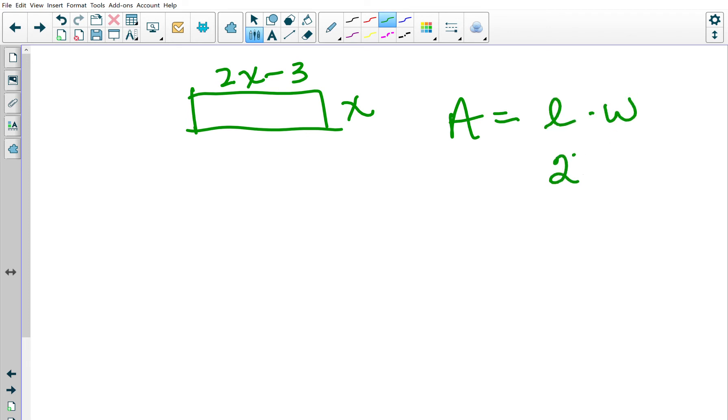The area of a rectangle is found by multiplying the length times the width, and we're told it's 27 square feet. So if I multiply X times 2X minus 3, that will equal 27.